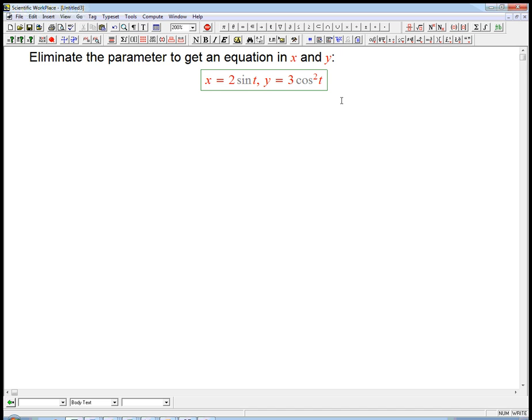Again, this is one of those ones where you don't want to just solve for t in terms of x or solve for t in terms of y like we often are able to do. You want to look for patterns. You want to look for an identity relating part of x and part of y. What I mean by that is part of the expression for x or part of the expression for y.